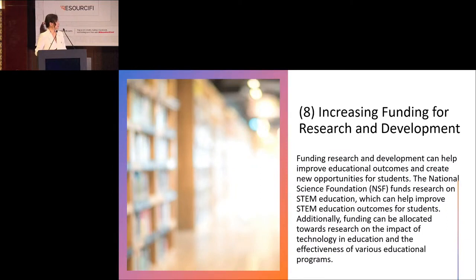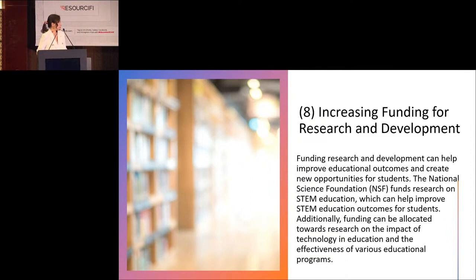The eighth solution: increasing funding for research and development. This is really important. Many of the world's most successful entrepreneurs allocate significant funding to research and development because it's for humanity's future. Funding research and development can help improve educational outcomes and create new opportunities for students. For example, the National Science Foundation funds research on STEM education to improve STEM outcomes. Funding can also be allocated toward research on the impact of technology in education and the effectiveness of various educational programs.